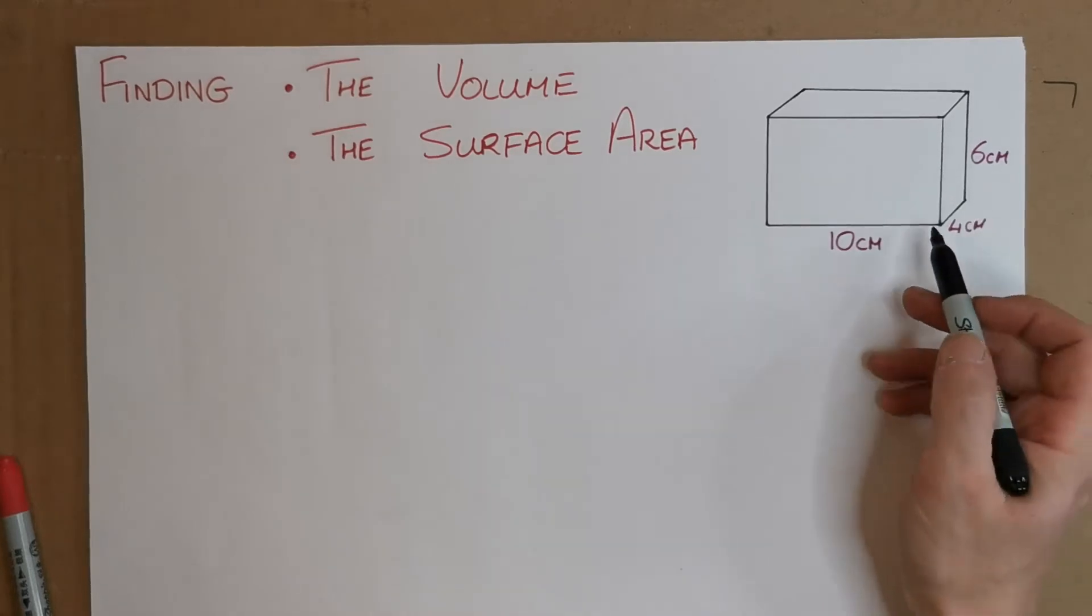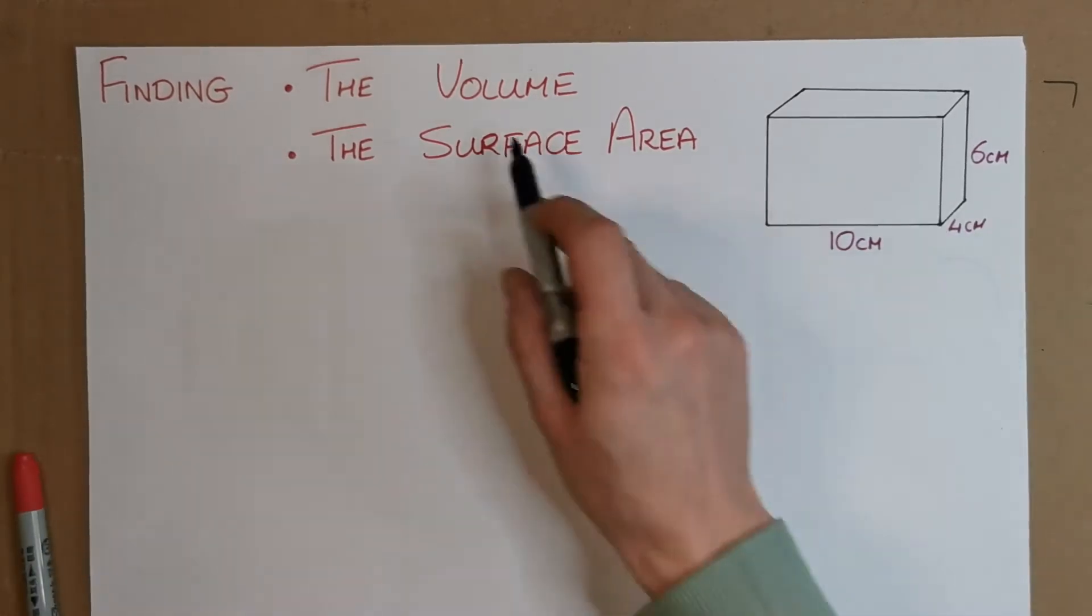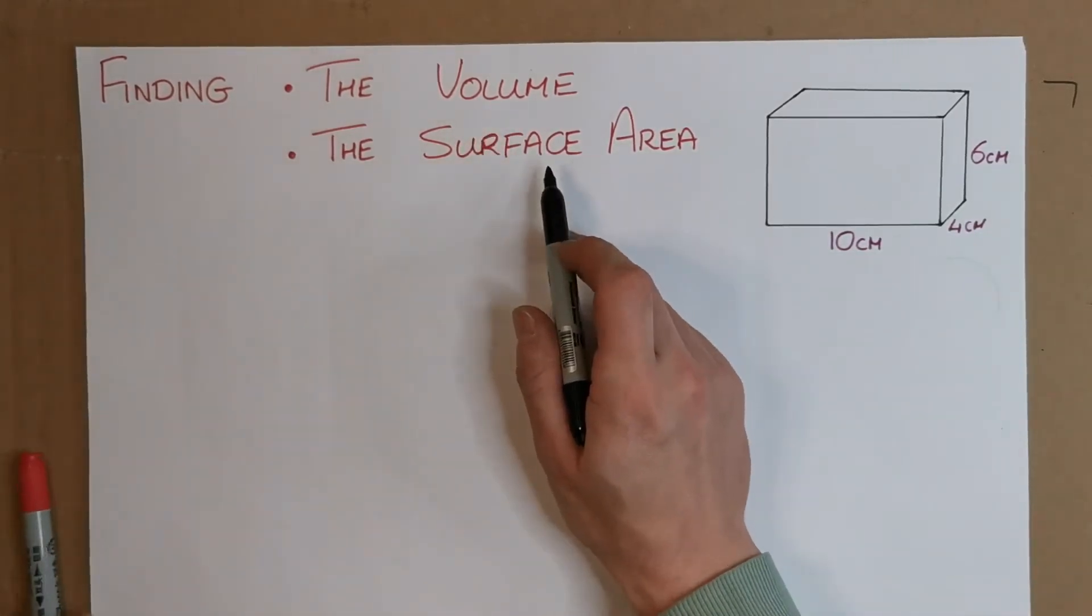So we have this shape here, this box, and we're looking for the volume and we're looking for the surface area.